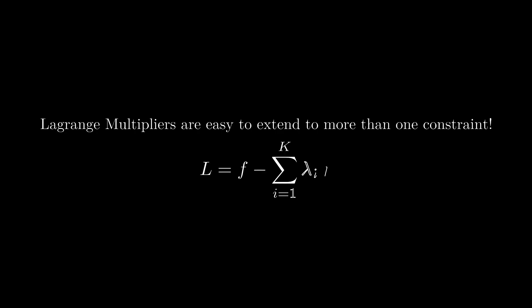For some final notes: in order to keep this video short, I had to omit a couple of practical details. First, Lagrange multipliers are really easy to extend to situations with more than one constraint — in fact, that's one of the reasons they're so powerful. For a problem with k constraints, you simply add a new multiplier lambda i for each constraint g sub i, and make your Lagrange function f minus the sum of all lambda i times g i. This gives you a system of n plus k equations, and the solutions are your stationary points.